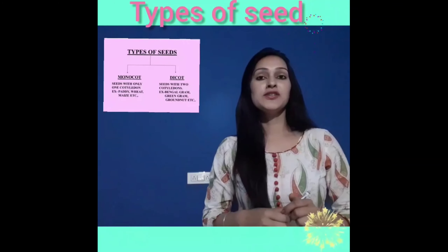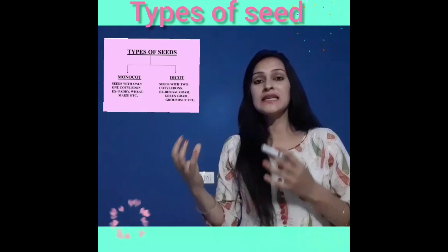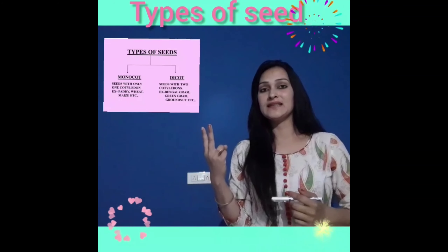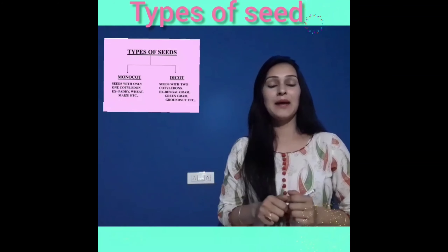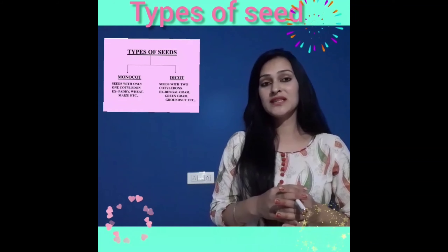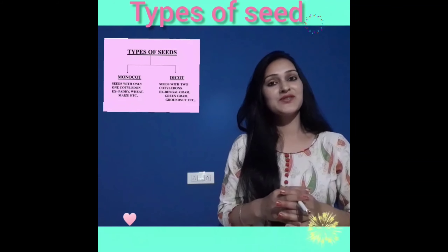Now dicot — seeds with two cotyledons. Examples include green gram, groundnut, etc.